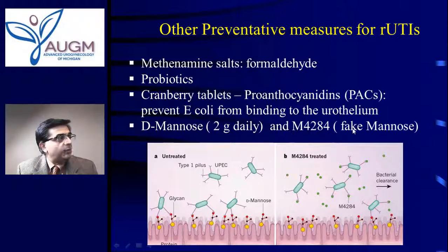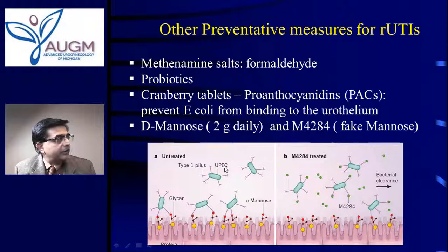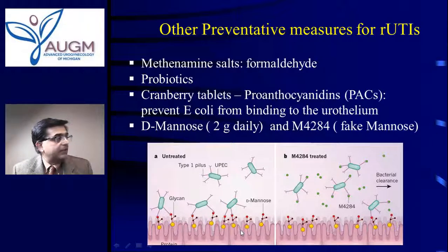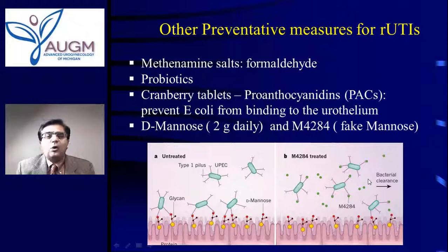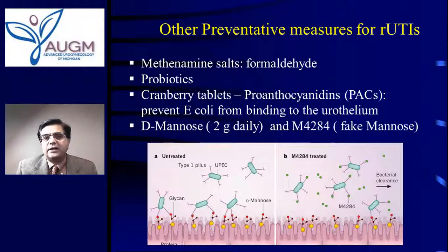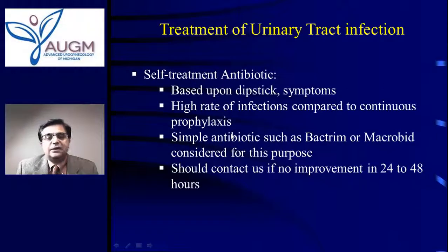D-mannose and M4284 (a mannose analog) can also be taken for this purpose. The UPEC E. coli has pili or hooks that attach to the mannose on the bladder lining surface, causing a bladder infection. If you give D-mannose from outside, the bacteria's pili attach to the free D-mannose instead of the bladder lining, and when you urinate it gets flushed out and cleared. That is one mechanism we think mannose works. But again, it has not been shown in clinical trials to be very effective — clinical trial data is lacking.